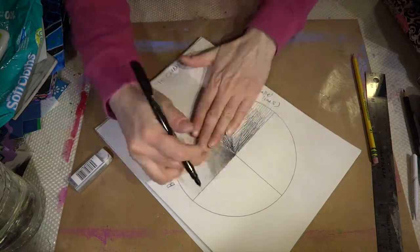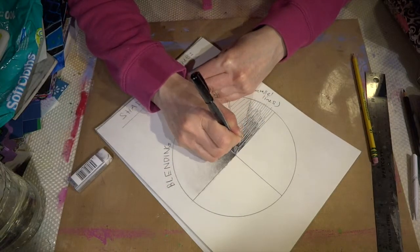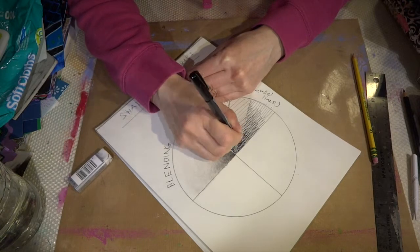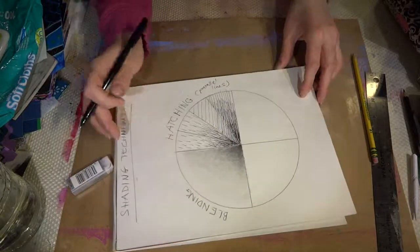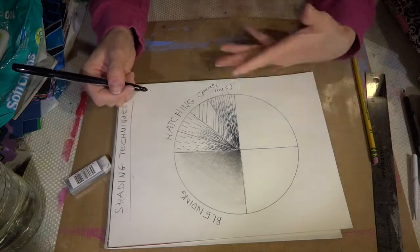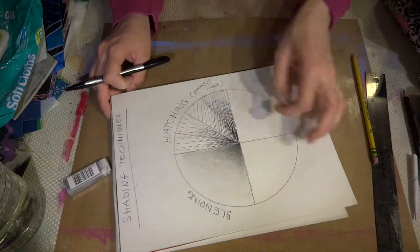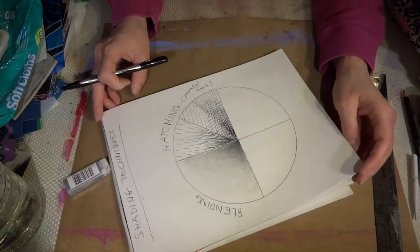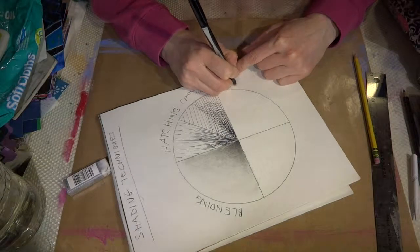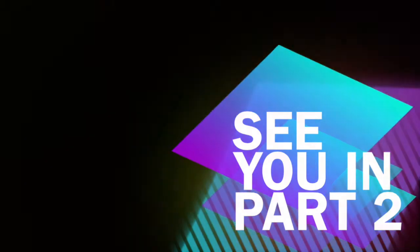Alright, this was hatching. You can go ahead pause the video again and pick one of the techniques or methods you like and shade your circle or use even two or three. You can go ahead and see.